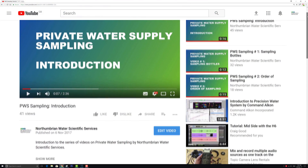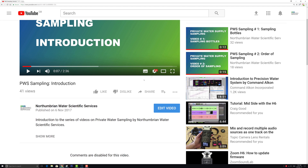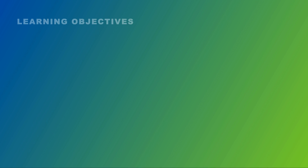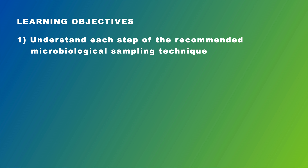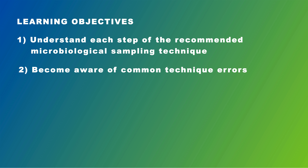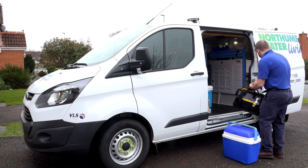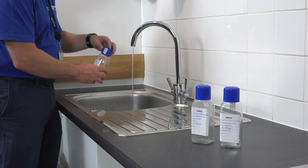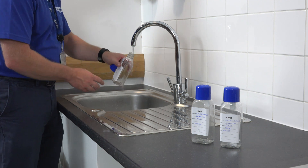In this video, we may make reference to other videos in the series, and when we do this, we'll ensure that links to the reference videos are available at the foot of the playing window. We have two specific learning objectives: firstly, to familiarise you with each individual step of the recommended microbiological sampling technique, and secondly, to make you aware of the common technique errors that may affect the quality of your samples. The techniques we'll demonstrate are compliant with DWI and MODW guidance, and are the same techniques our own samplers use when sampling potable waters to monitor our regulatory compliance.